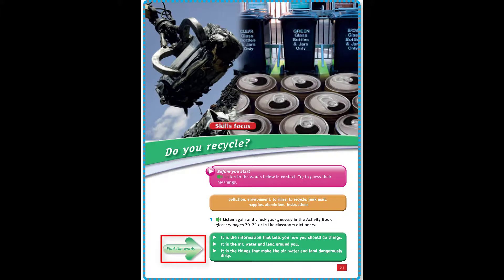Find the words activity: It is the information that tells you how you should do things — Instructions. It is the air, water and land around you — Environment. It is the things that make the air, water and land dangerously dirty — Pollution.